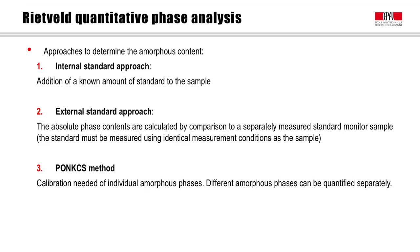The first approach is to add a known amount of internal standard into the sample — this is called the internal standard approach. The second is the external standard approach, in which the quantification results are rescaled based on a comparison to a separately measured monitor sample. The third method is the PONCS method, which stands for partially or known non-crystal structure method. This method requires separate calibration of the amorphous phase but enables quantification of different amorphous phases in the same sample.